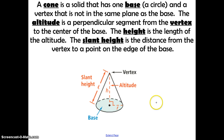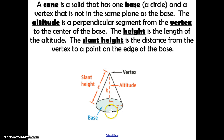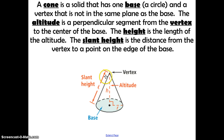A cone is a solid that has one base, a circle, and a vertex that is not in the same plane as the base. This is similar to a pyramid, except the base is a circle. The altitude is the perpendicular segment from the vertex to the center of the base. The height is the length of that altitude, and the slant height is the distance from the vertex to a point on the edge of the base.